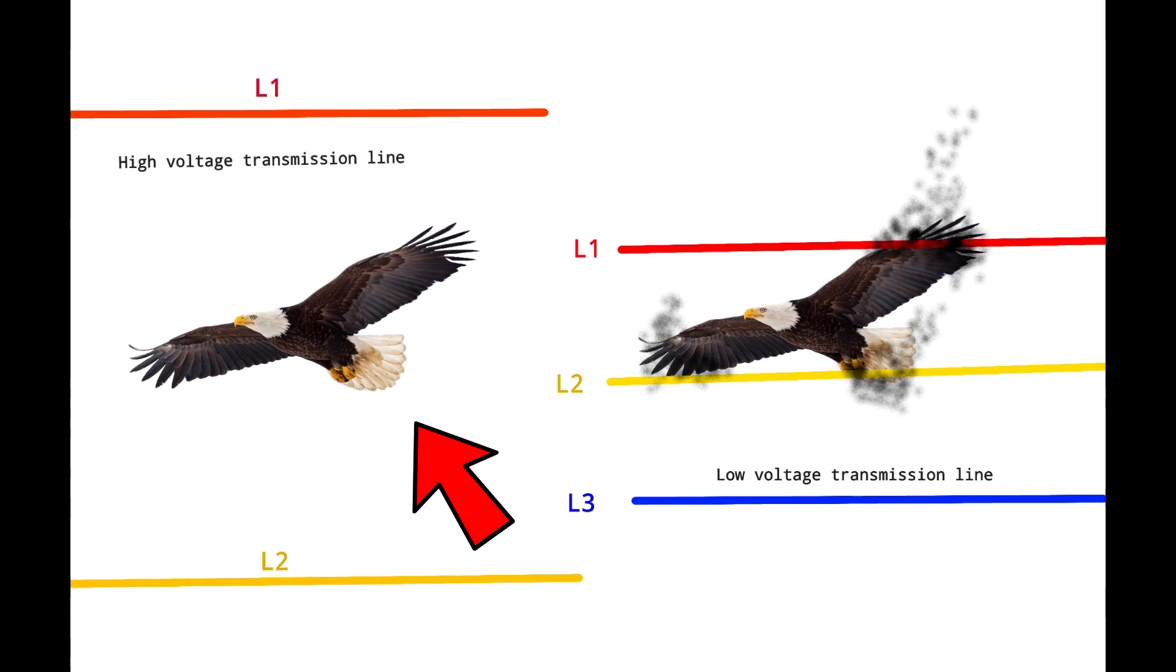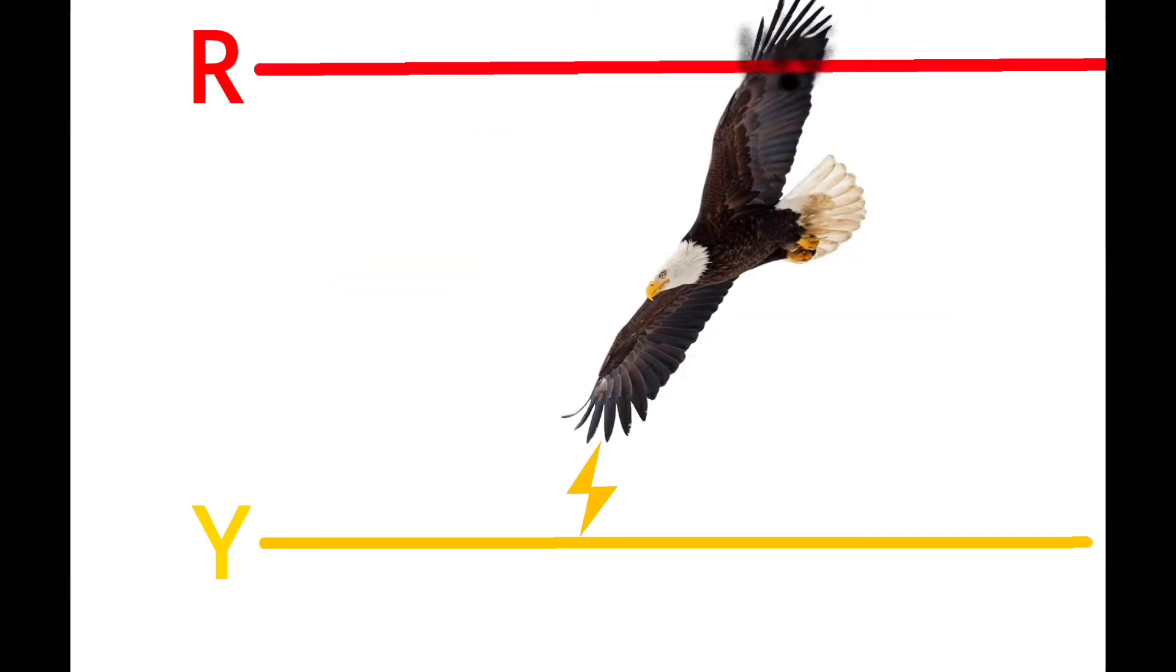And here the same bird is not getting any harm. And in some cases, if a big bird's wing touches only on HV wire, then it might also be electrocuted. Thinking how?